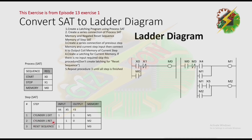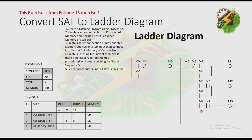Now we have cylinder 1 retract with x5. We need to create a series connection between the previous memory and the current input, then connect it to the current memory which is m2, and create a latching. Lastly, we use the memory of the previous step, which is m2, with input x4, and connect it to the current memory m3. Because it is the reset sequence, we will not create a latching here.